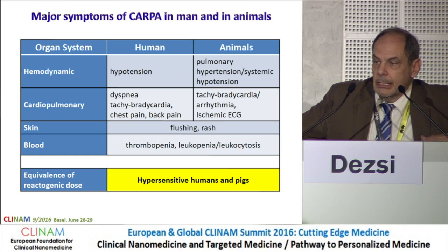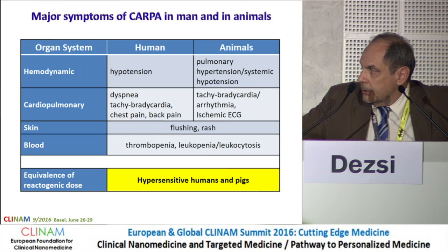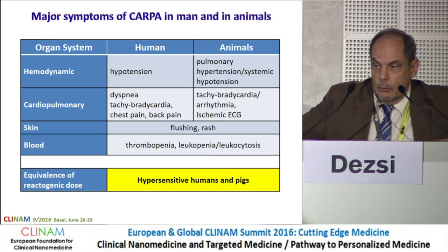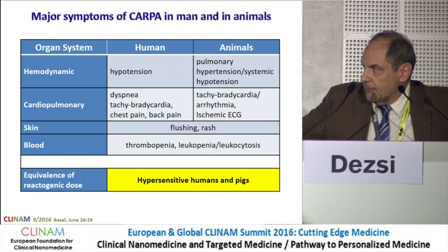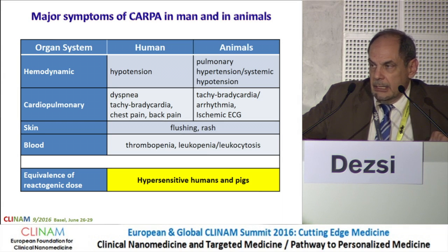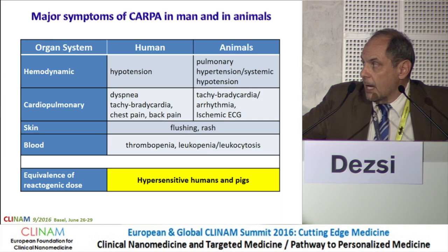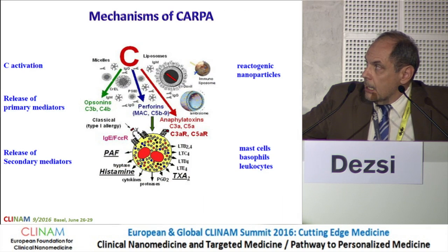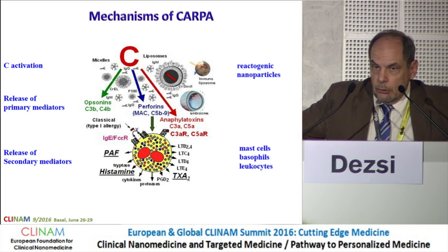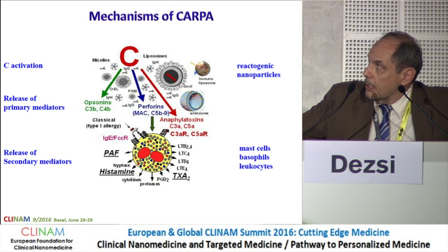CARPA symptoms include hemodynamic effects, cardiovascular and pulmonary effects, skin reactions, and blood cell changes. These are very similar in humans and in animals. Janos already told you about the porcine model, which is the most important so far. We have to emphasize that it is a very sensitive model and it reflects the CARPA behavior of hypersensitive humans. Of course there are big differences between humans and pigs, but I won't go into detail.